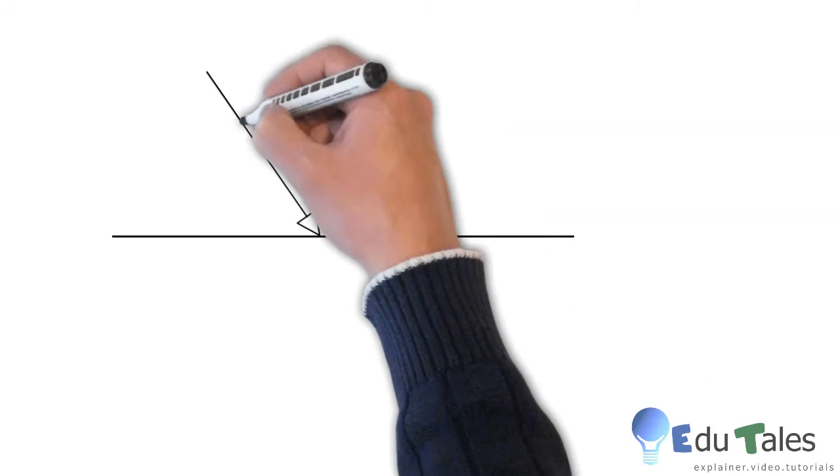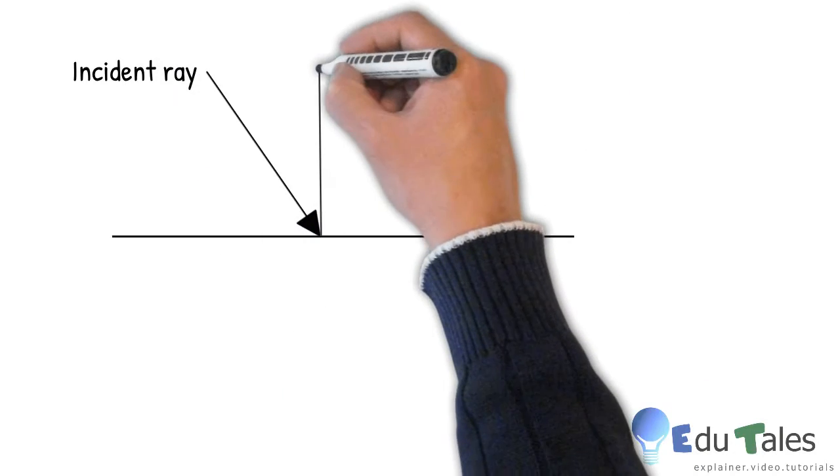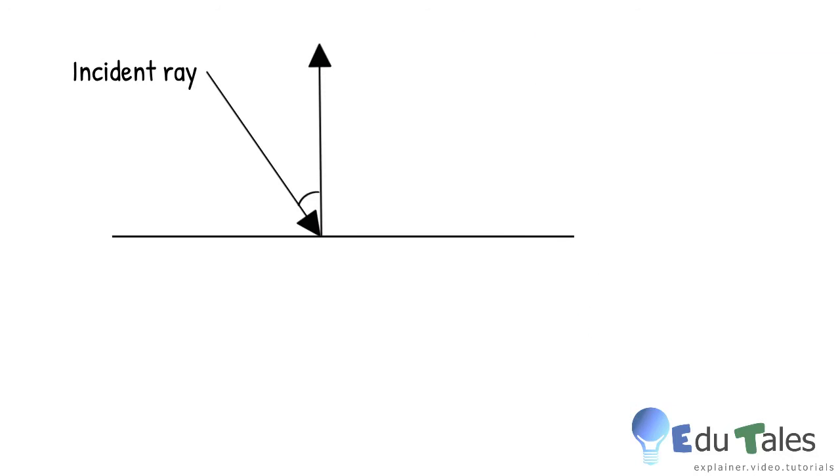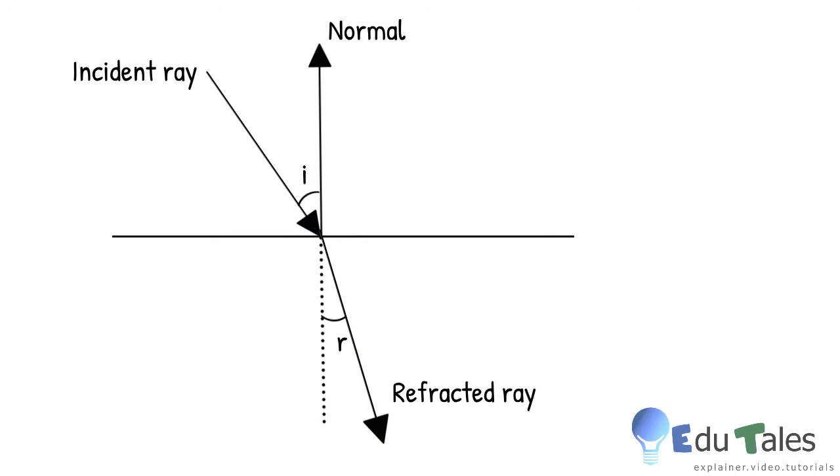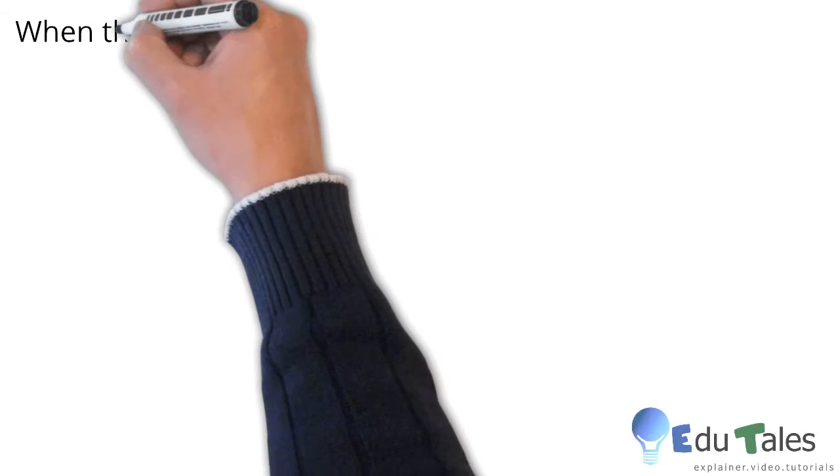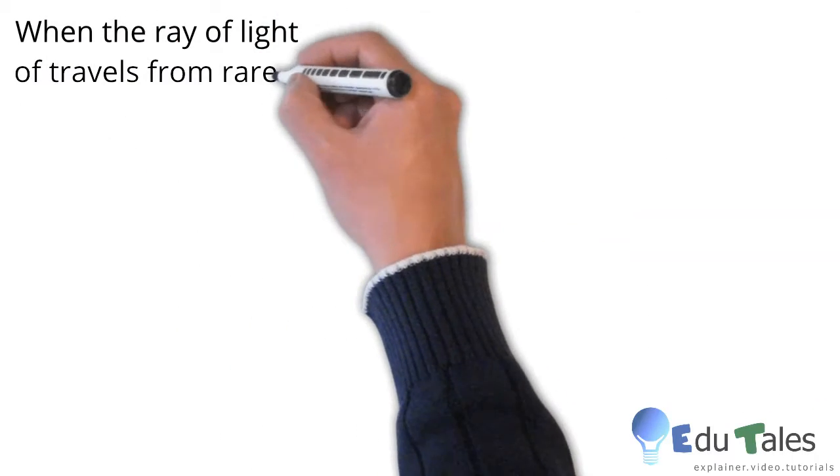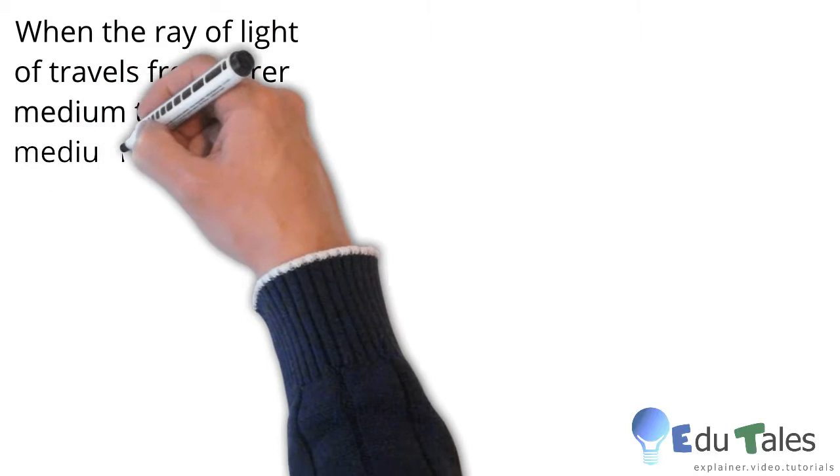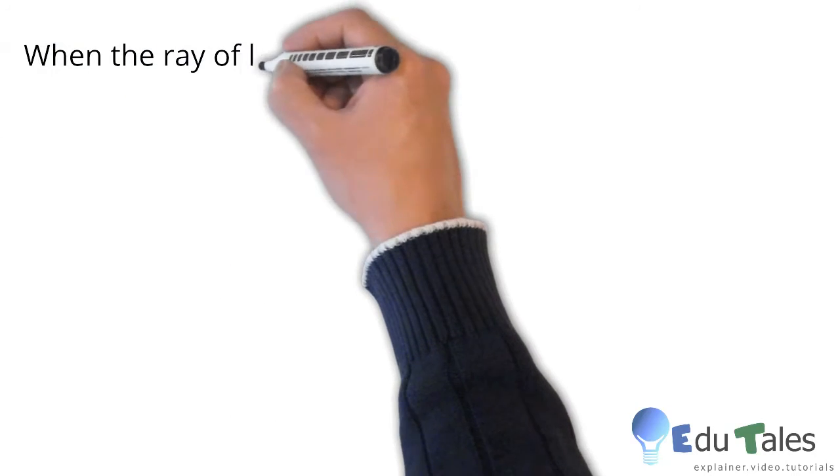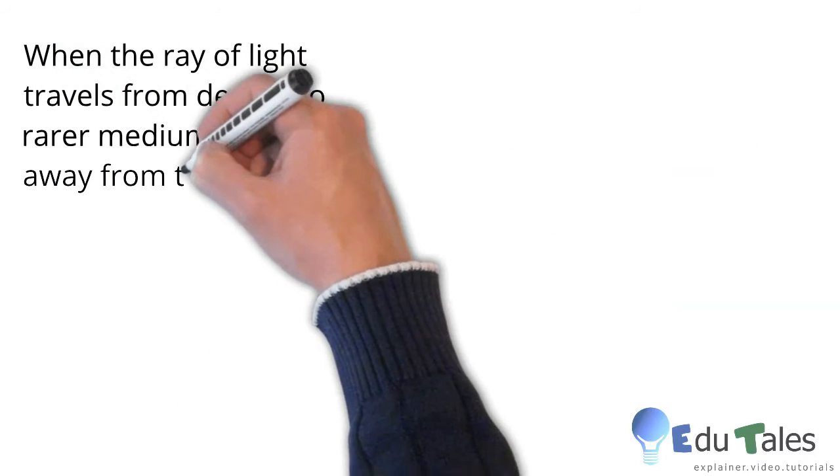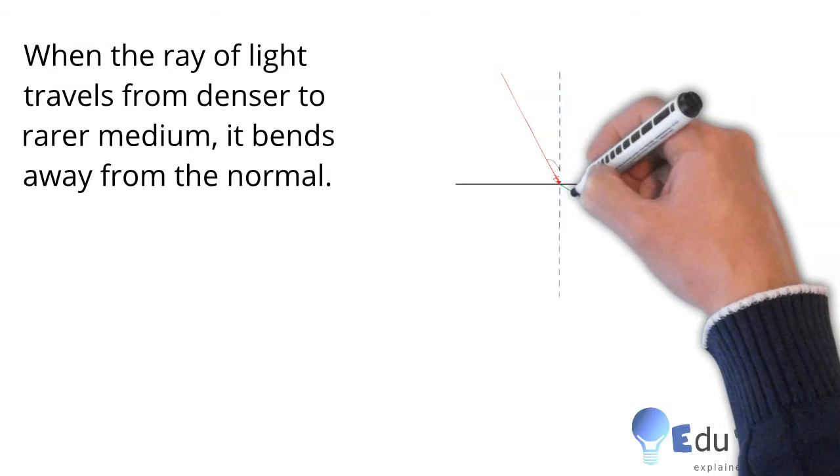The ray of light is incident on the surface of the medium making angle i with respect to the normal and gets refracted making angle r with respect to the normal. You must remember that if a ray of light travels from a rarer medium to a denser medium, then it bends towards the normal. When it travels from denser medium to the rarer medium, it bends away from the normal. If it is incident normally on the surface, then it passes through it without deviating.